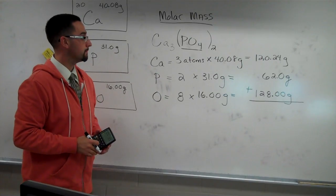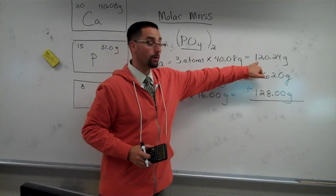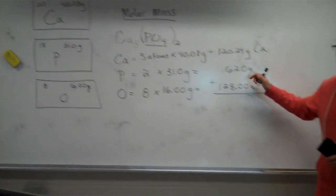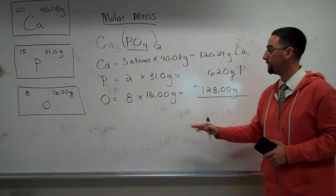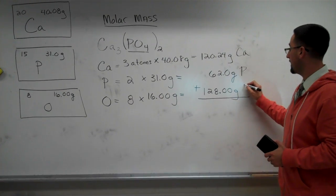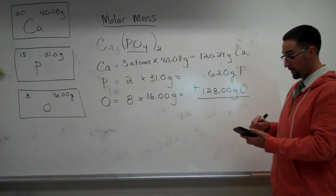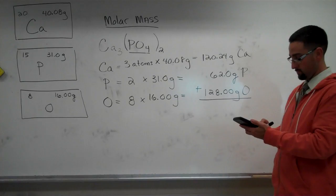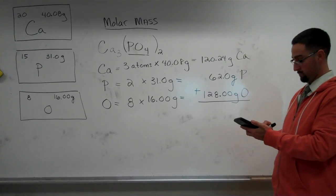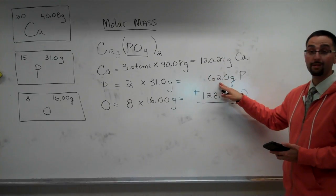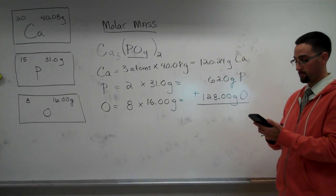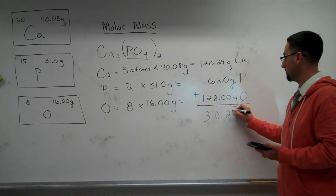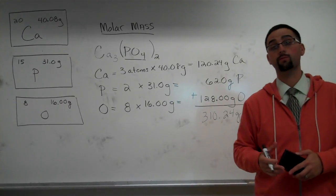Okay, to sort of backtrack here, 120.24 grams is from the calcium, 62 grams is from the phosphorus that make up the compound, and finally, 128 grams is from the oxygen. So what we have to simply do here is add up these totals here, 120.24 plus 62 plus 128 grams, and that's going to get us in the ballpark of 310.24 grams.